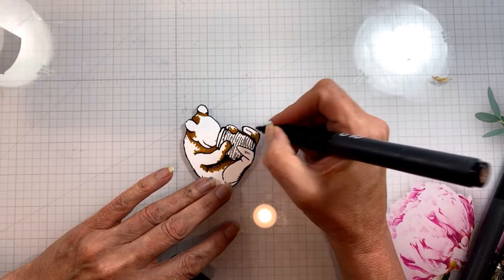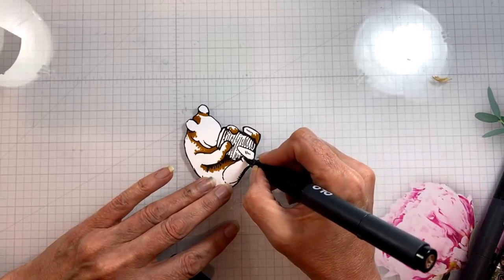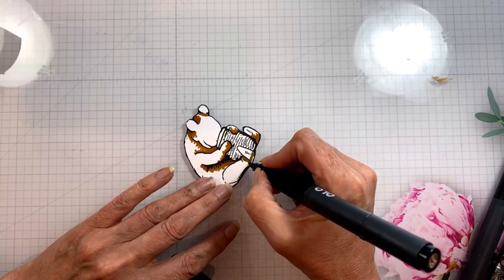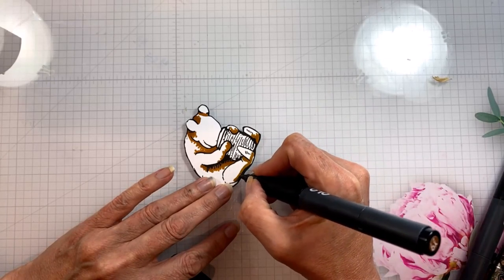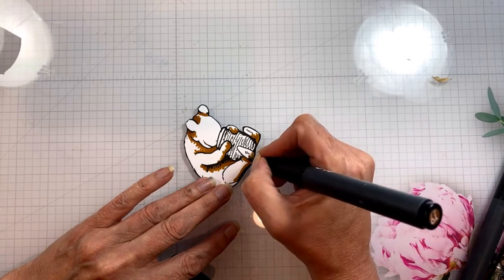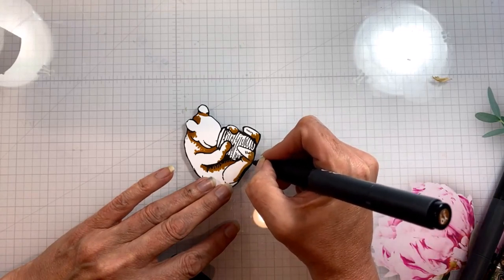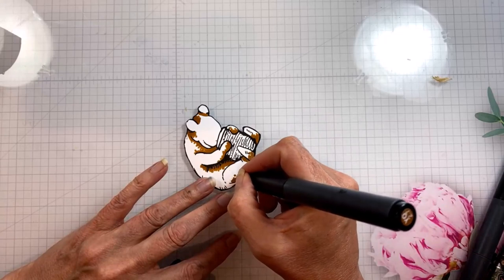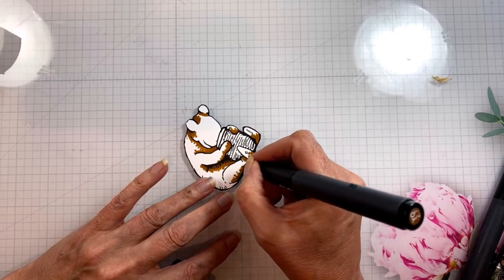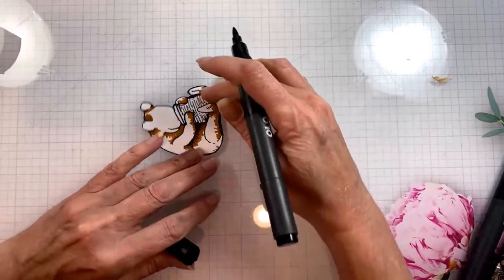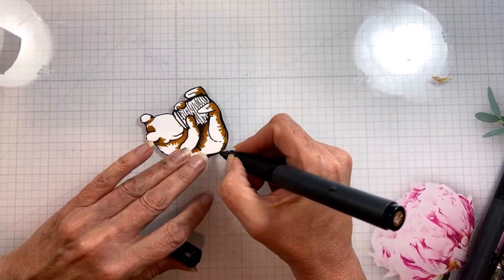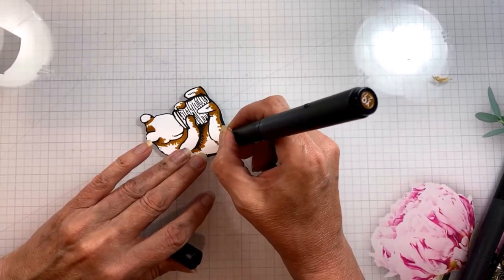If you look at a teddy bear or stuffed animal, especially a really well-loved one like my Pooh Bear was, you'll notice that there are little rounded bits of fur that sort of stick together and it's very easy to do this with the brush tip of an Olo marker.